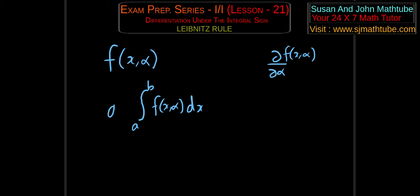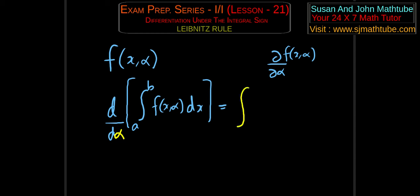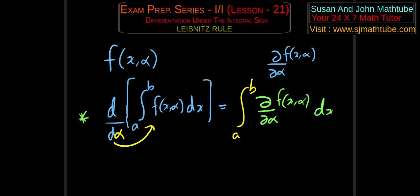Then you consider the definite integral from a to b of f(x, alpha) dx. You are allowed to differentiate this integral — that is the idea of differentiation under the integral sign. We have the integral symbol but we are going to differentiate the whole thing. The derivative with respect to alpha is equal to the integral from a to b, and when the derivative goes inside, it becomes the partial derivative.